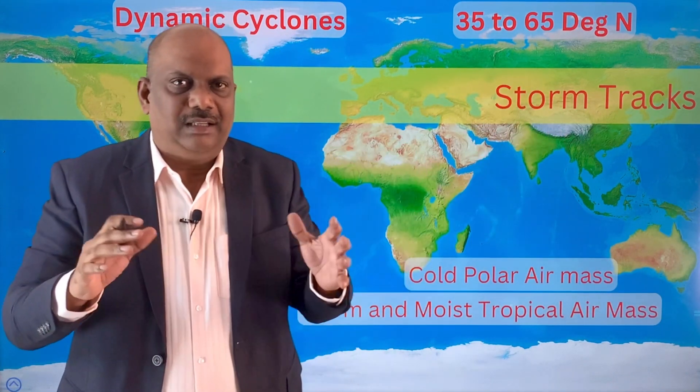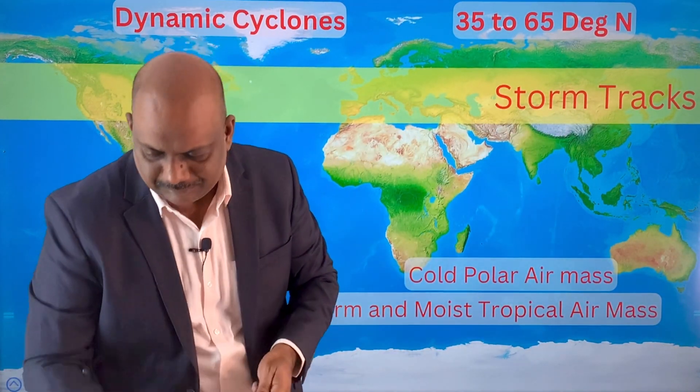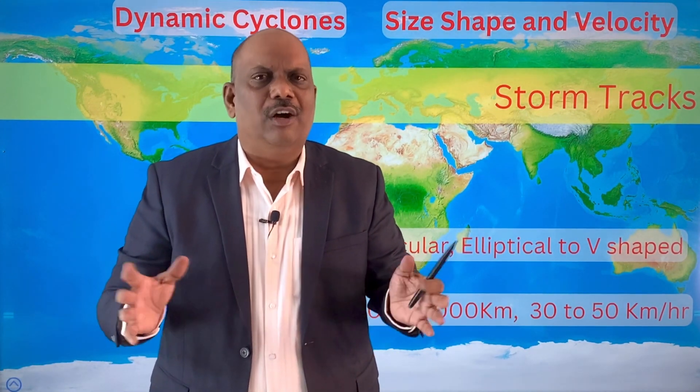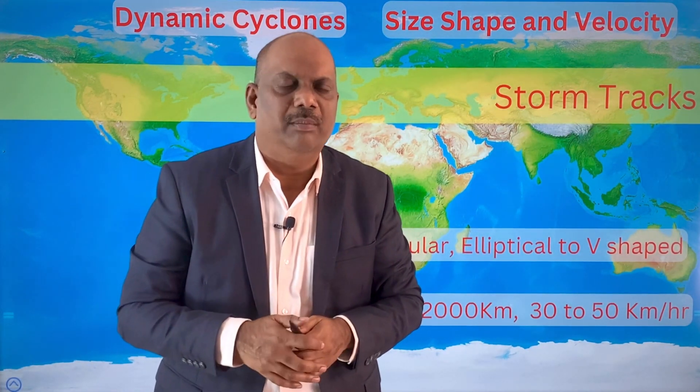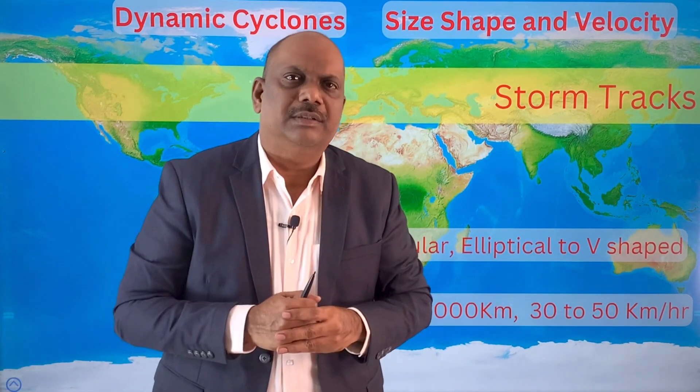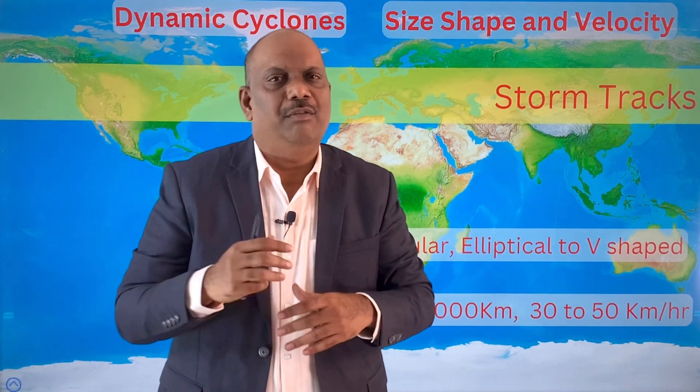Regarding the size of a temperate cyclone: unlike tropical cyclones, temperate cyclones are very large in extent. The average diameter of one temperate cyclone may range between 1,000 to 2,000 kilometers. Sometimes it may even be ten times more than that, and a single temperate cyclone may cover one entire continent.